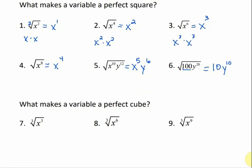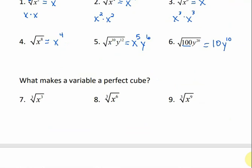What makes a variable a perfect cube? Just like with numbers, it has to be able to be multiplied times itself three times. What can I multiply times itself three times to get x cubed? x times x times x, which is x cubed. So the cube root of x cubed is x. We can do the same thing as with square roots — just divide the exponent by the index. 3 divided by 3 is 1. 6 divided by 3 is 2: if I did x squared times x squared times x squared, that's x to the sixth. So the cube root of x to the ninth: 9 divided by 3 is 3.